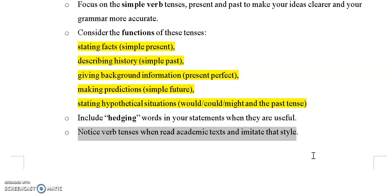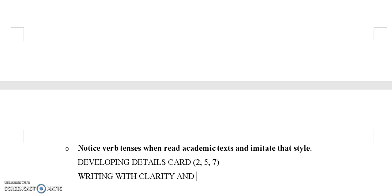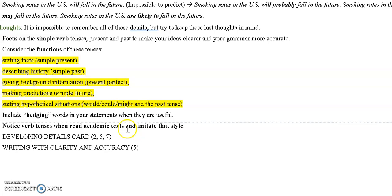Finally, I'll mention the 'Developing Details' card, which has a number of sections on verb tenses and verb forms — section two on verb tenses, five on passive voice, and seven on conditionals. In the 'Writing with Clarity and Accuracy' card, section five has issues on factual statements, predictions, and hypothetical statements. When you use those resources, they are going to be focused on the kind of language you need for academic writing. Look back through this and get this information so that you can improve your writing — make it simple, get these basic things under control in your writing. Good luck.